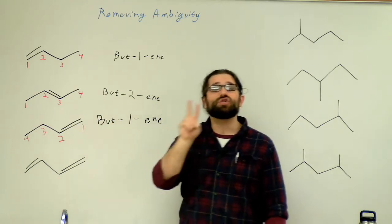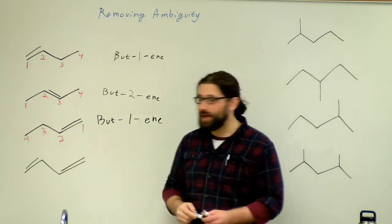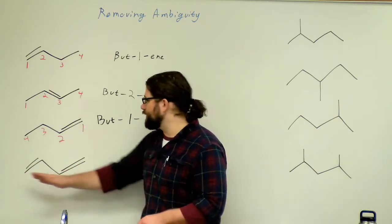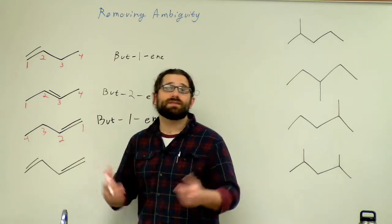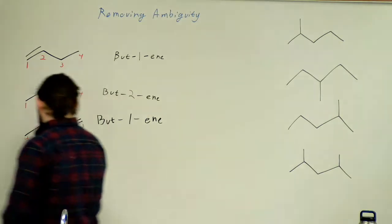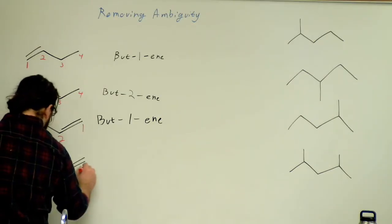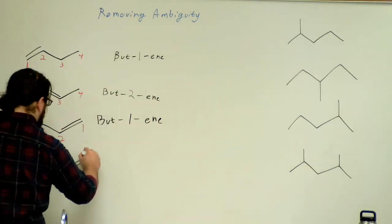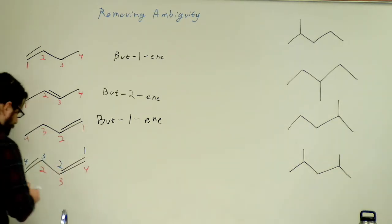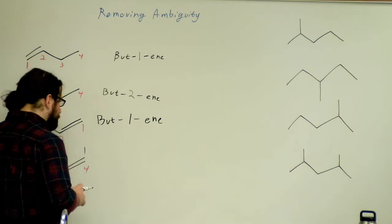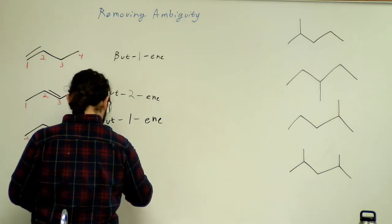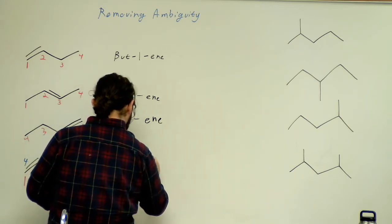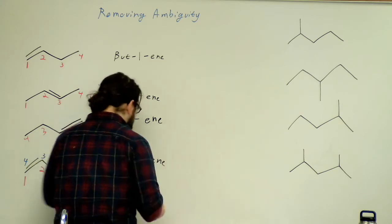Last one. This has two double bonds. This is going to be, once again, a little bit different. Now since they both start on the end carbon, it doesn't matter which way I number it. So I can number this left to right or right to left, and it would end up being the same thing. So I'm going to number this in red and in blue so that we can see that. So one, two, three, four.